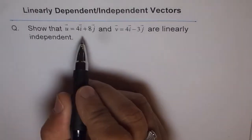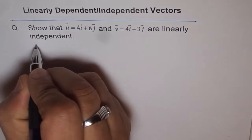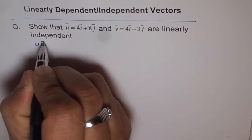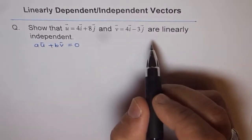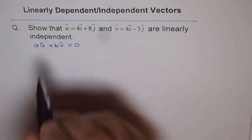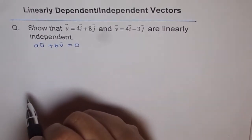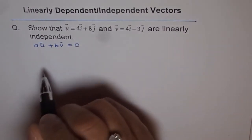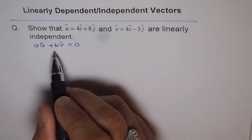write u and v as a linear combination. For example, we can write it like a*u plus b*v equals 0. And if they are linearly independent, then that is possible only when both a and b are 0. But if we can find a nonzero value of a and b, then they become dependent.